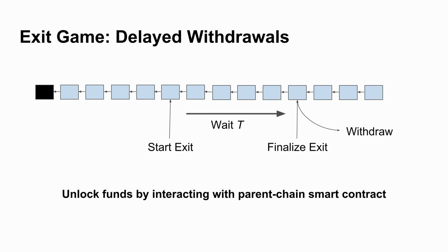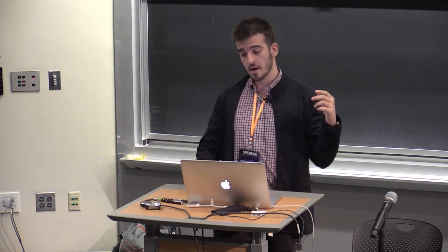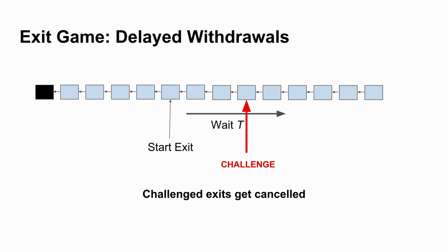This is the happy case and it always happens. You can alternatively introduce a method where some other party sees your exit, validates it, checks that it's okay, and buys it at some discount — so you get your funds out instantly — but that's an additional protocol on top. In the unhappy case, when you're trying to cheat, somebody can come in and challenge you and you can no longer get your funds out, which is correct since you were trying to cheat.